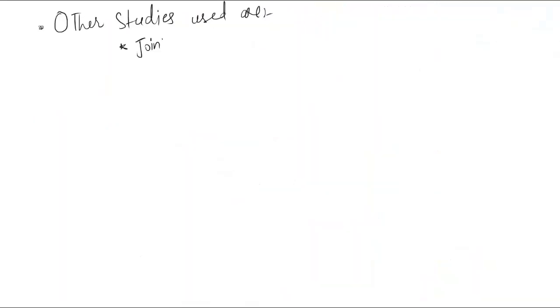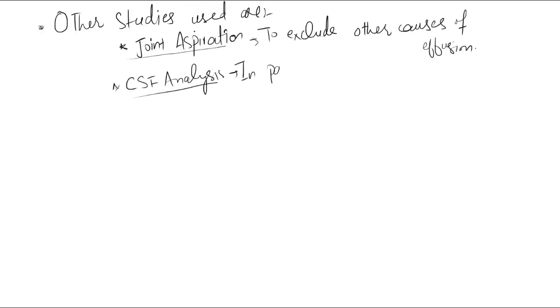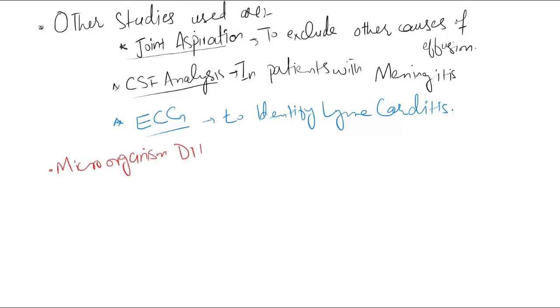Other studies that may be used are as follows: joint aspiration to exclude other causes of effusion, CSF analysis in patients with meningitis, ECG to identify Lyme carditis. Microorganism DNA detection by PCR has also been applied to blood, urine or CSF, and biopsies of skin and synovium.